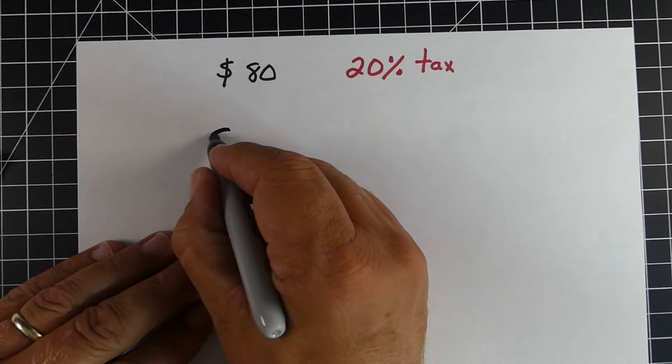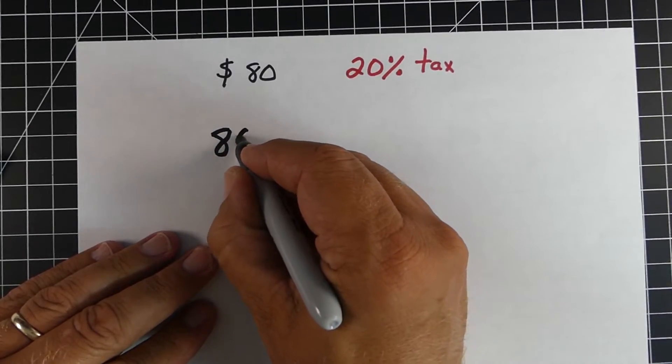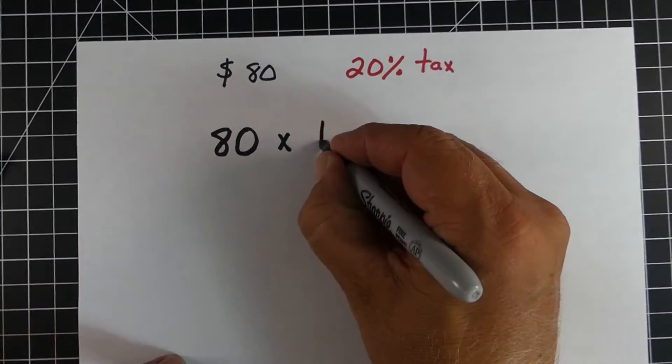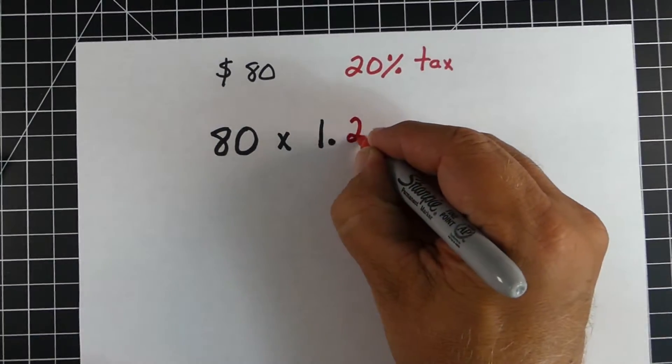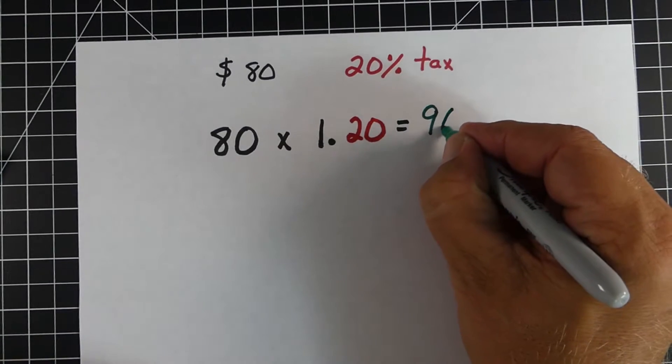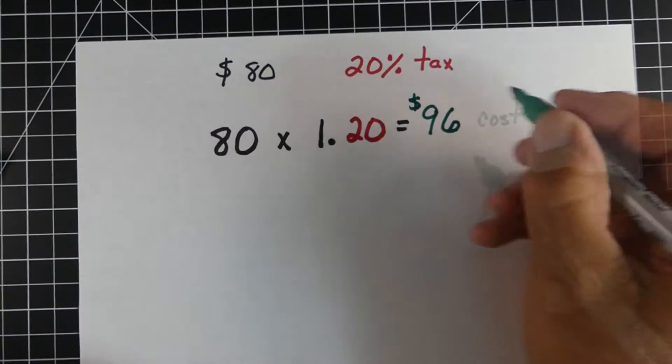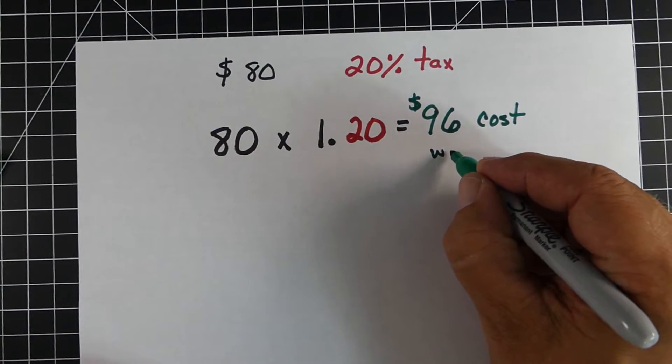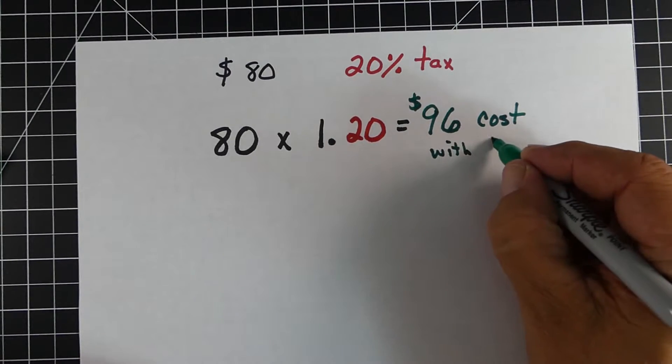Now here's an example of method two. So we're going to use the same amount, the same situation, $80, 20% tax. What we're going to do now is we're going to take the $80 and we're going to multiply by 1.2 or 1.20. And when we do that, we also get $96. So we actually get the cost with the tax doing it this way as well.